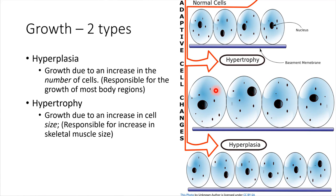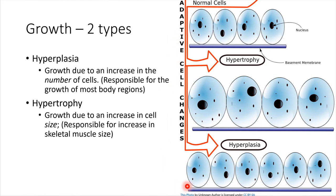The other type of growth is when the cells actually divide, and that's called hyperplasia. This is the one that involves mitosis — that process of cell division — and it's what we'd like to review in this chapter.